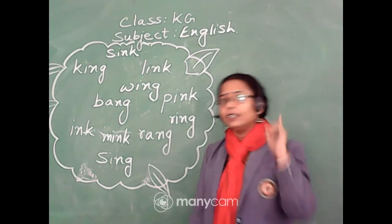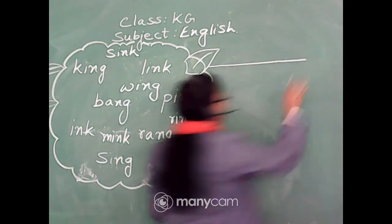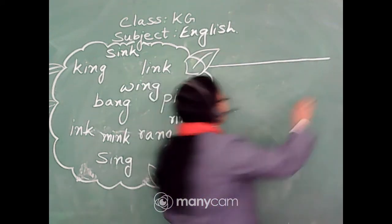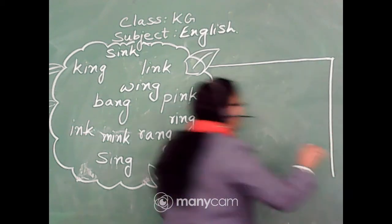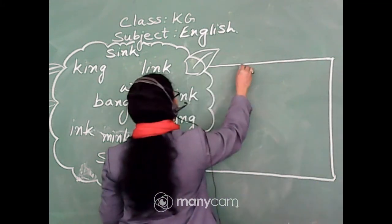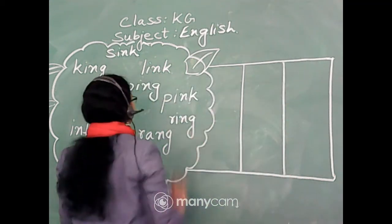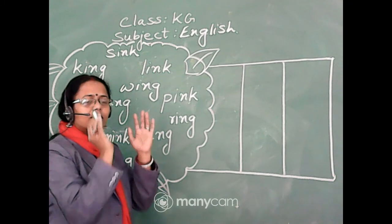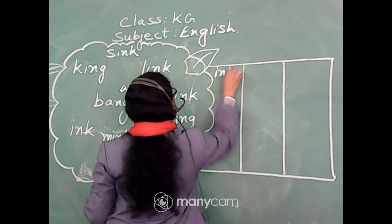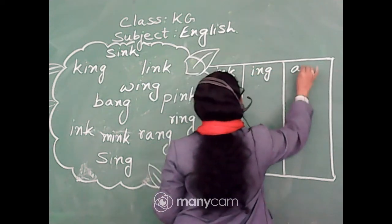So let us make three columns for three different sounds. Here I am going to make three columns — let me see if it is visible for all of you. So here is the first one, the second one, and the third one: ink, ing, and ang.